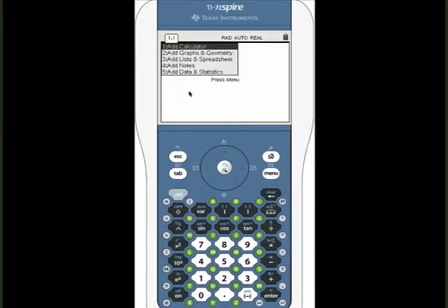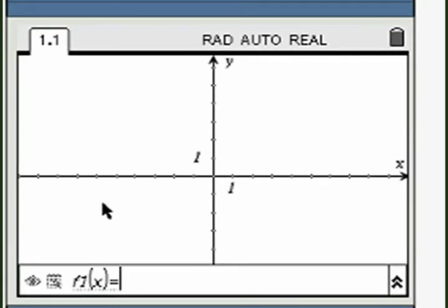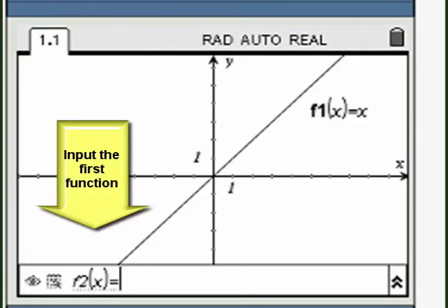Open a new graphing window. Define linear function F1 in terms of a variable. Press Enter to graph it.